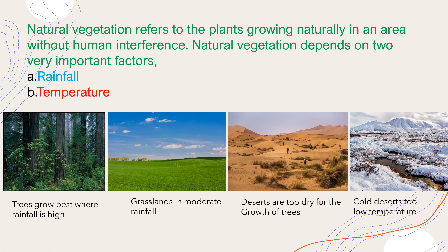Deserts are too dry for the growth of trees. So they support thorny bushes and shrubs and very low quality vegetation. Similarly, the cold deserts with very low temperatures also do not support good quality vegetation. They support poor quality vegetation like mosses and lichens.